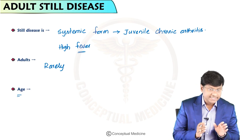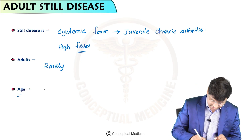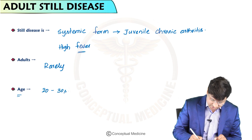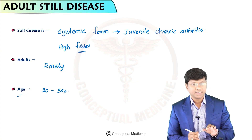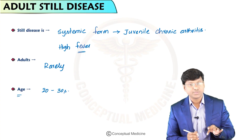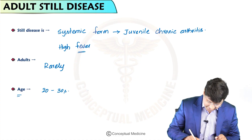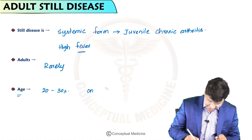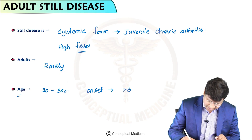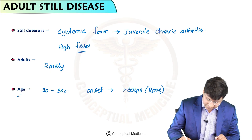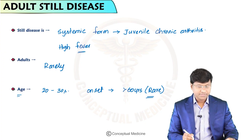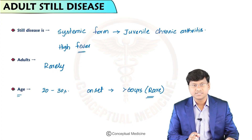If you take the exact age group, they are seen around their 20s or 30s. Occasionally the onset can be seen even beyond 60 years, but that is a very rare phenomenon. So that is the basic introduction to Still's disease.